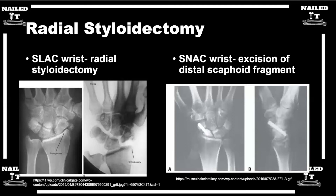For SNAC wrists, going back to the spoon analogy: the proximal pole in a SNAC wrist or non-union is still coupled with the lunate by the SL ligament, so the proximal pole is in a more normal position — that's why you tend to see less arthritis there until later progression. One approach is a distal pole excision of the scaphoid along with styloidectomy, which is similar to the SLAC wrist styloidectomy — removing the arthritis with the hope that arthritis on the scaphoid fossa doesn't present itself until much later.